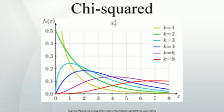Applications. The chi-squared distribution has numerous applications in inferential statistics, for instance in chi-squared tests and in estimating variances. It enters the problem of estimating the mean of a normally distributed population and the problem of estimating the slope of a regression line via its role in Student's t-distribution. It enters all analysis of variance problems via its role in the F-distribution, which is the distribution of the ratio of two independent chi-squared random variables each divided by their respective degrees of freedom. Following are some of the most common situations in which the chi-squared distribution arises from a Gaussian distributed sample. If X₁, …, Xₙ are i.i.d. N(μ, σ²) random variables, the box below shows probability distributions with names starting with chi for some statistics based on Xᵢ ~ N(μᵢ, σᵢ²), i = 1, …, k, independent random variables.